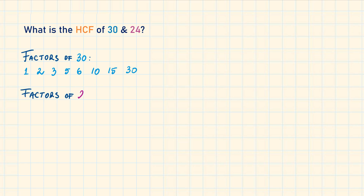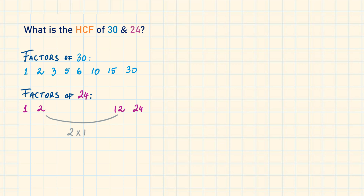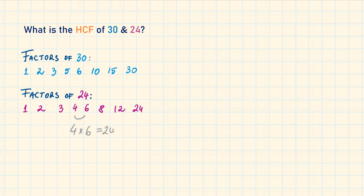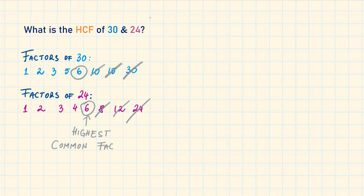Now let's list the factors of 24. The factor pairs are: 1 and 24, 2 and 12, 3 and 8, and 4 and 6. We can start crossing out from the highest factors until we find a common factor. We can see that 6 is the highest number that appears in both lists, so 6 is the highest common factor.